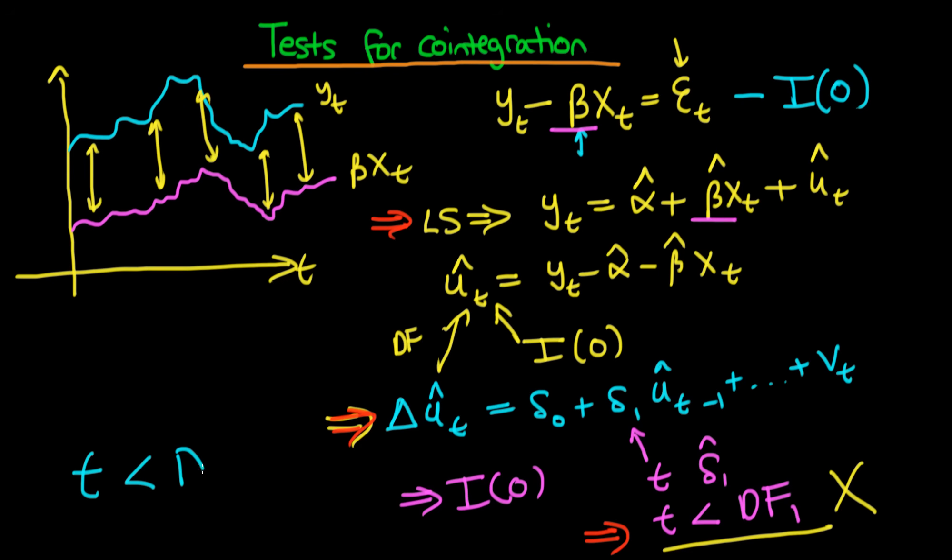And it turns out that because of the fact we're estimating beta we compare it with another Dickey-Fuller distribution which is slightly more stringent than the original Dickey-Fuller distribution. In other words, its critical values are that much more negative than the original Dickey-Fuller distribution. So it's that much less likely that we will reject the null hypothesis. And there's some further intuition for this.